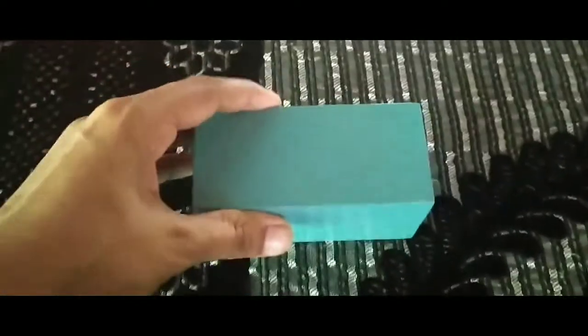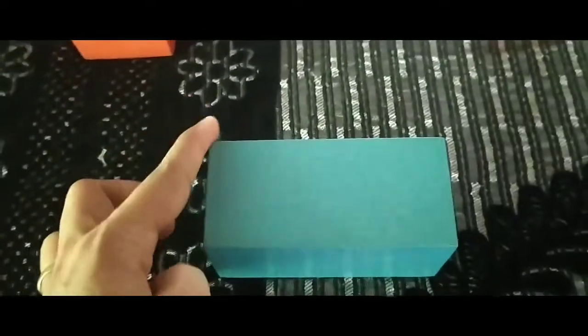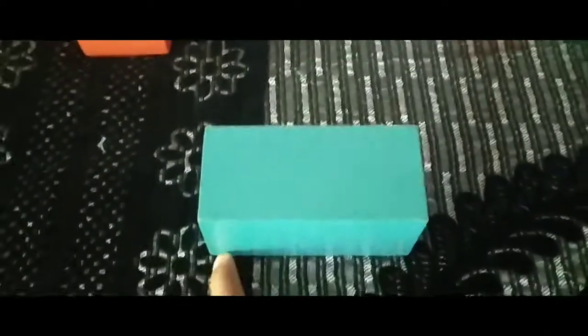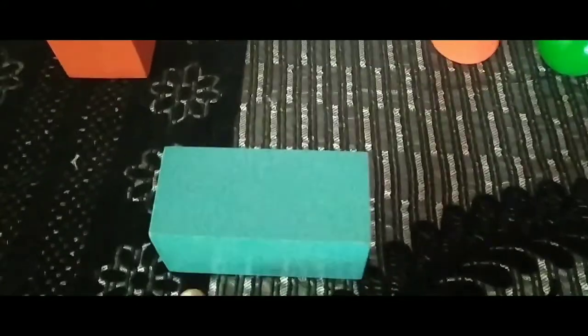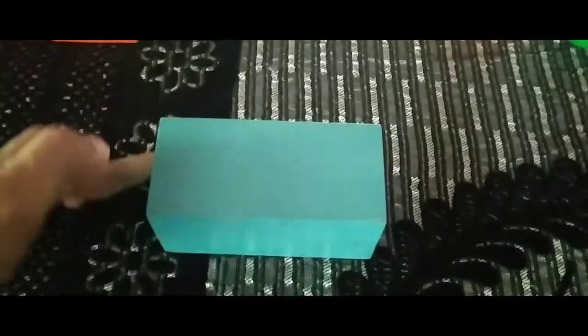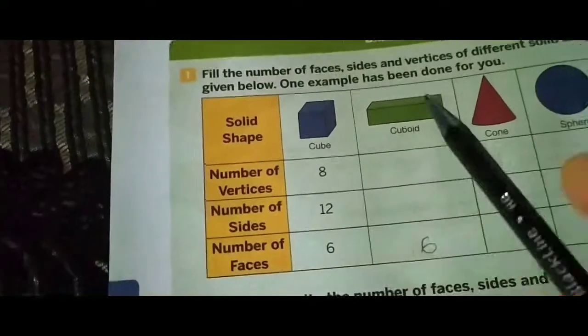Next, we will talk about sides or edges: 1, 2, 3, 4, 5, 6, 7, 8, 9, 10, 11, 12. So a cuboid also has 12 sides.